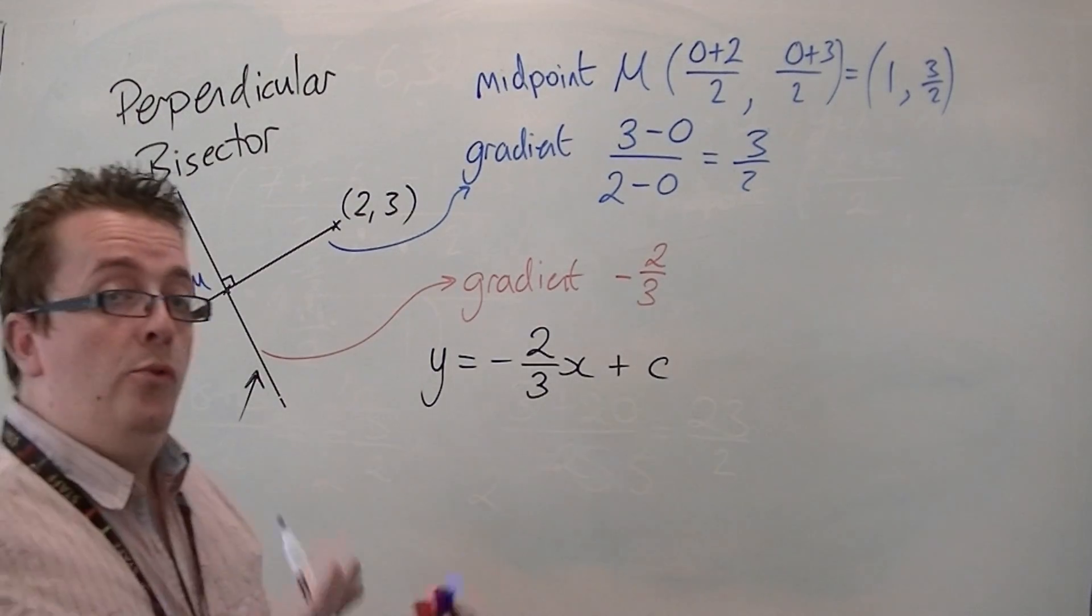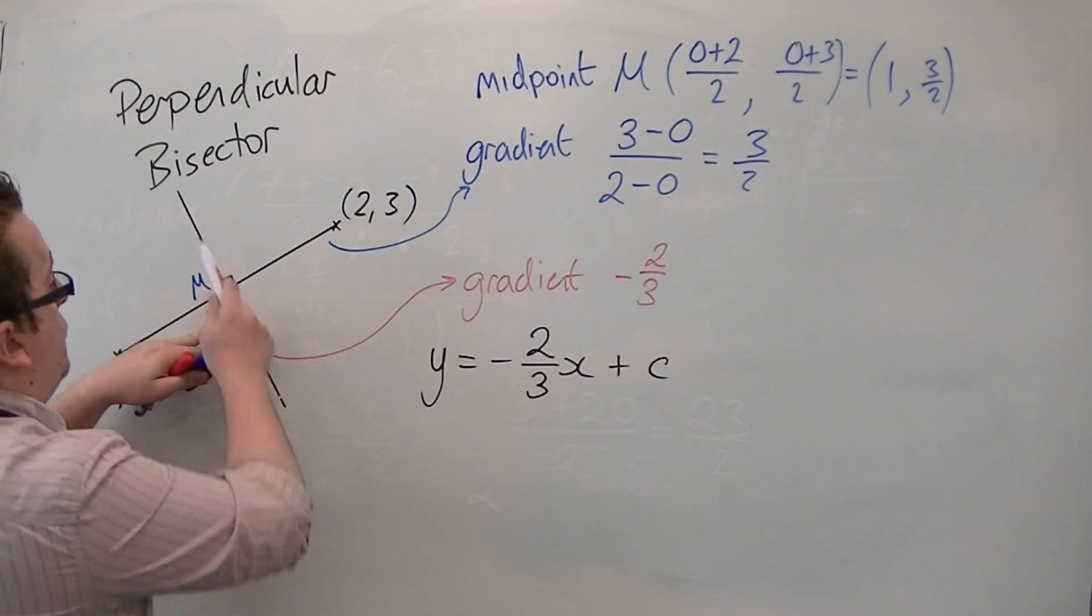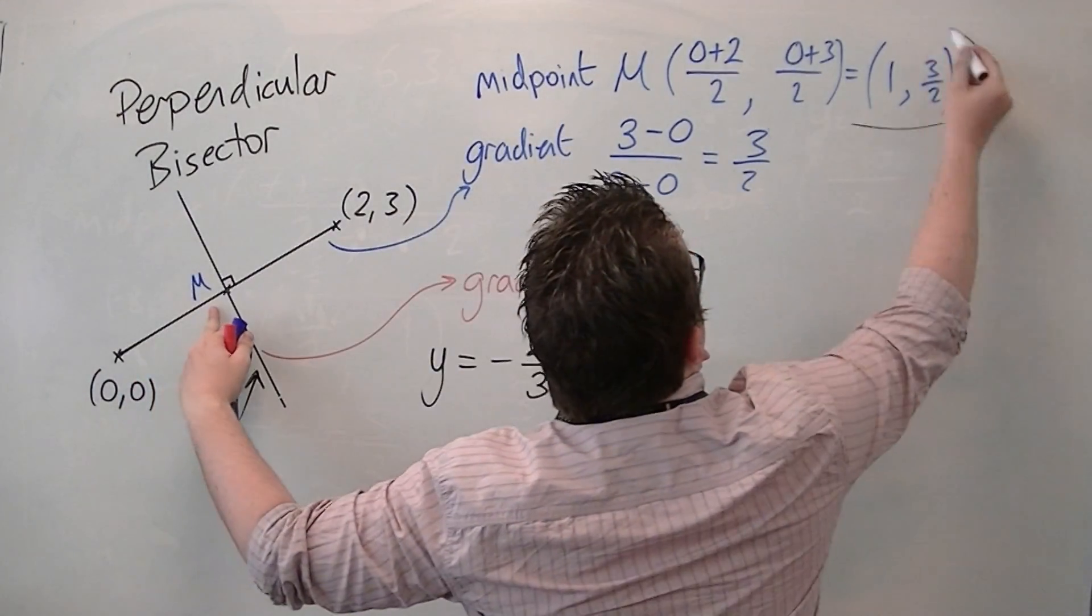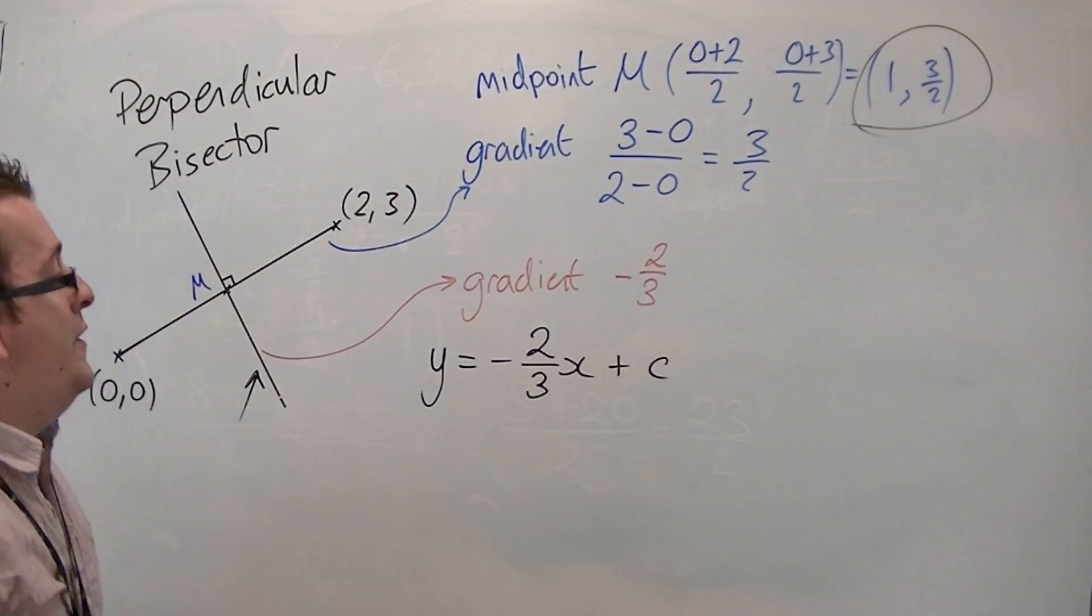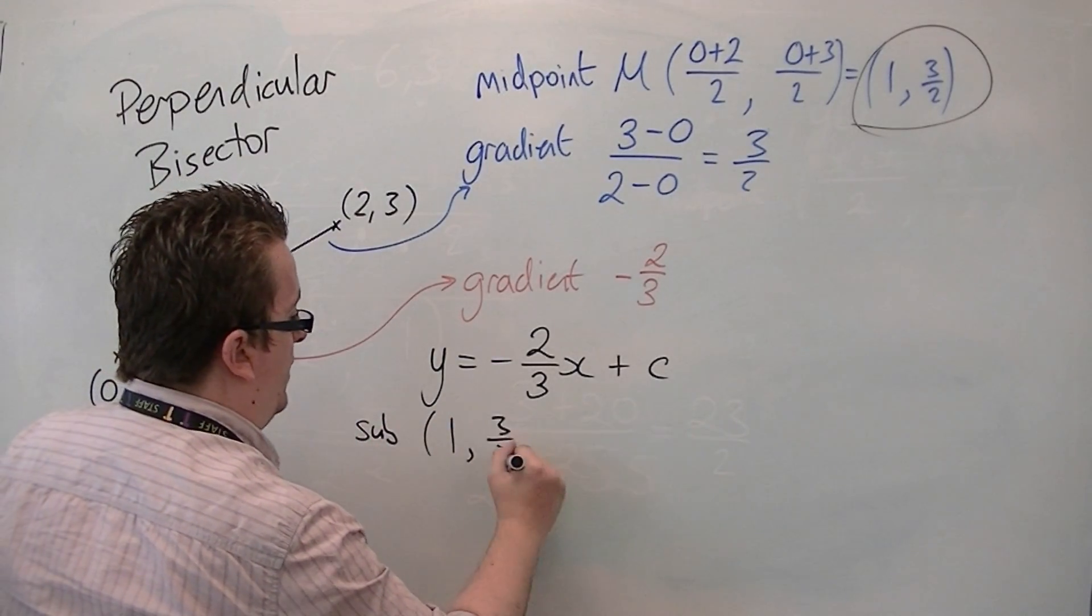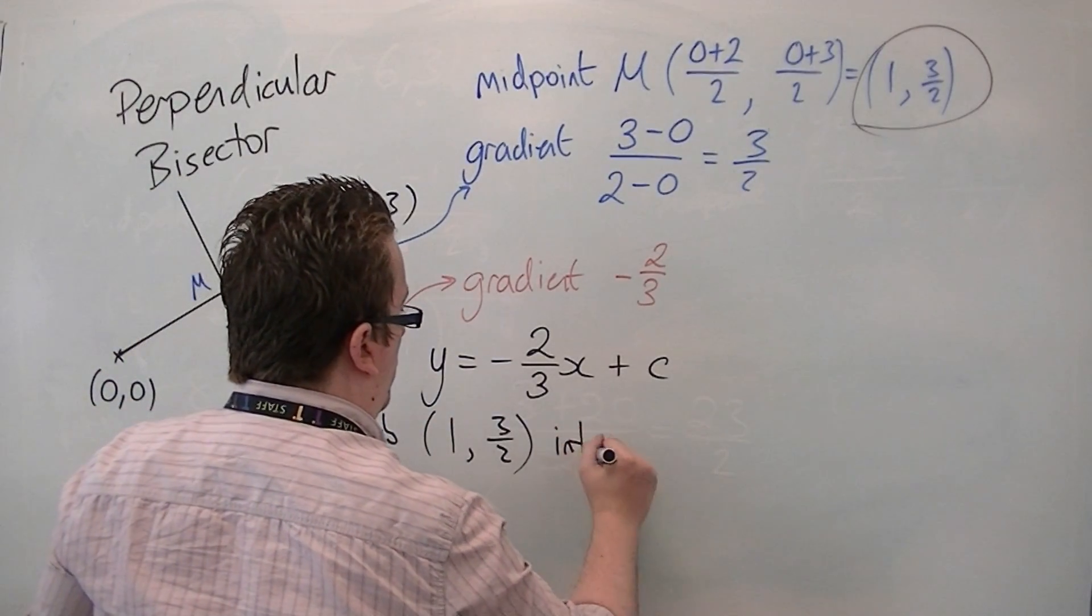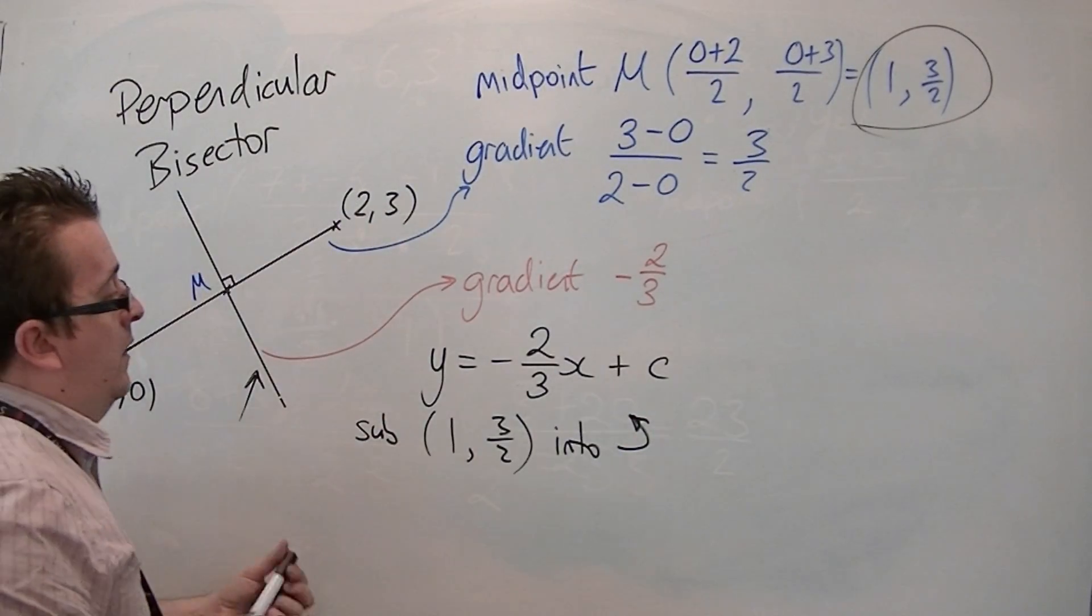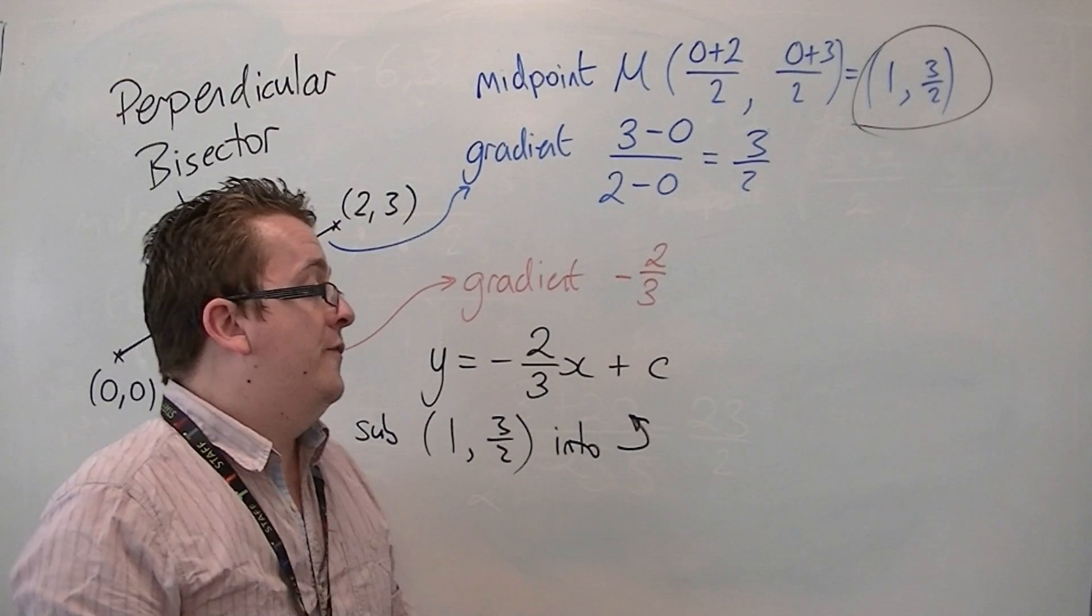I know that this line passes through the coordinates of M, which is 1, 3 halves. So, if I sub 1, 3 halves into this equation, I am then going to be able to find the value of c.